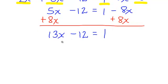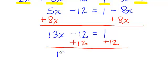I have 13x minus 12 over here. To get rid of this negative 12, I'm going to add 12 to both sides. On the left side, I will have 13x. On the right side, 1 plus 12 is 13.